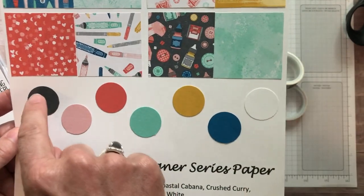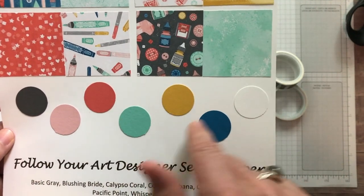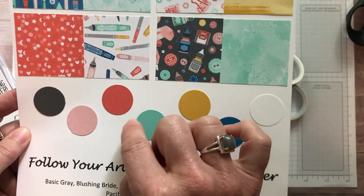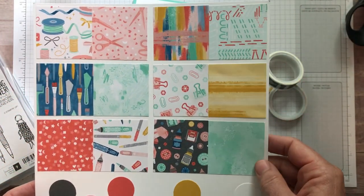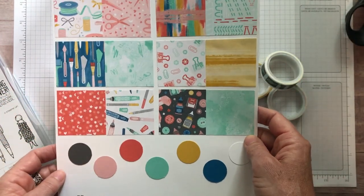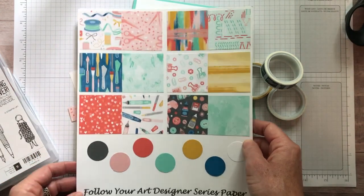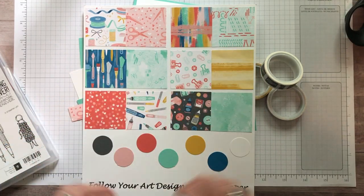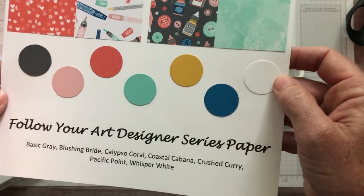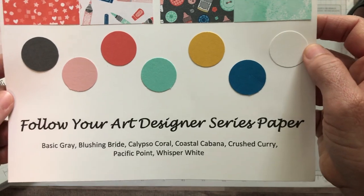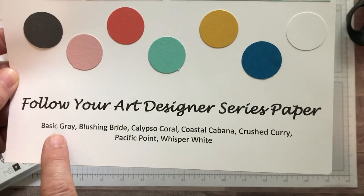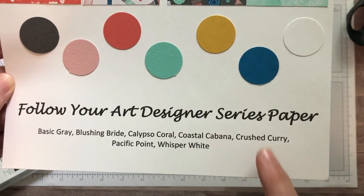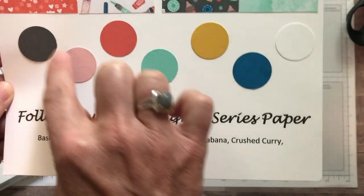And then I love this, including these little one inch circles that tell me all of the solid colored cardstock that coordinate with the colors in our designer series paper. That is probably one of the most fabulous things that Stampin' Up does for us, gives us that great color coordination with our cardstock and the colors in the designer series paper. The Follow Your Art coordinates with Basic Gray, Blushing Bride, Calypso Coral, Coastal Cabana, Crushed Curry, Pacific Point and Whisper White cardstock.